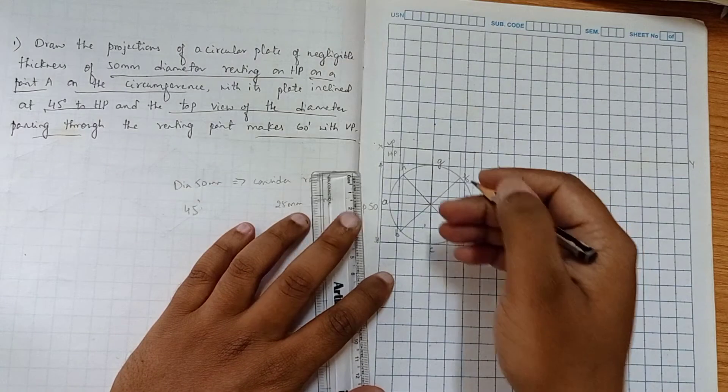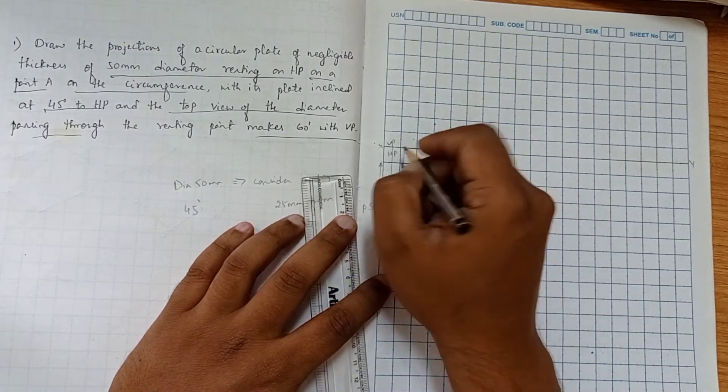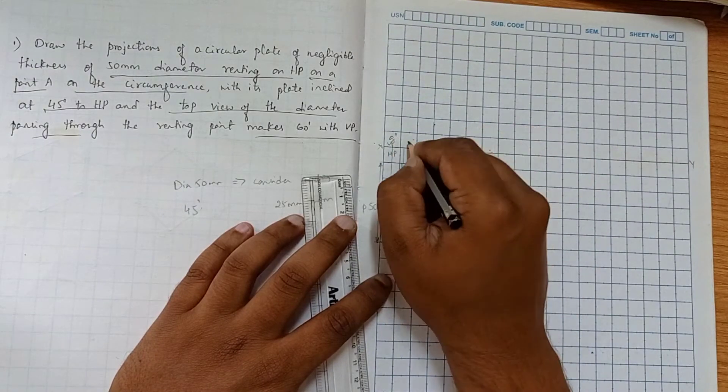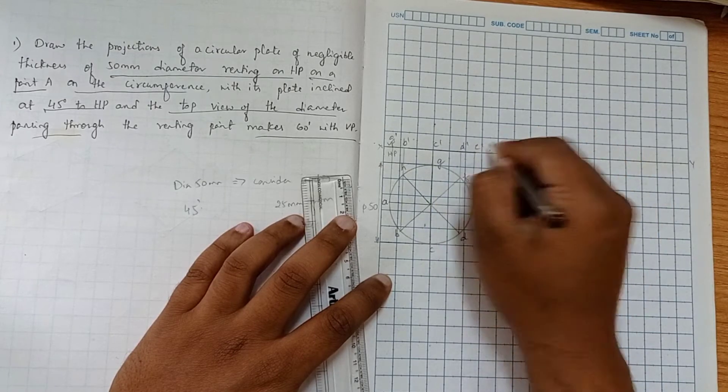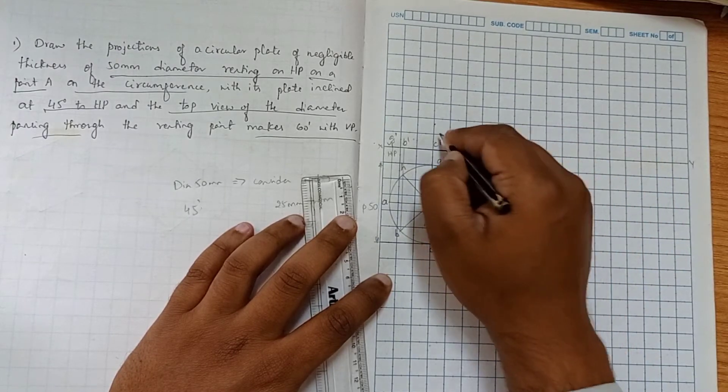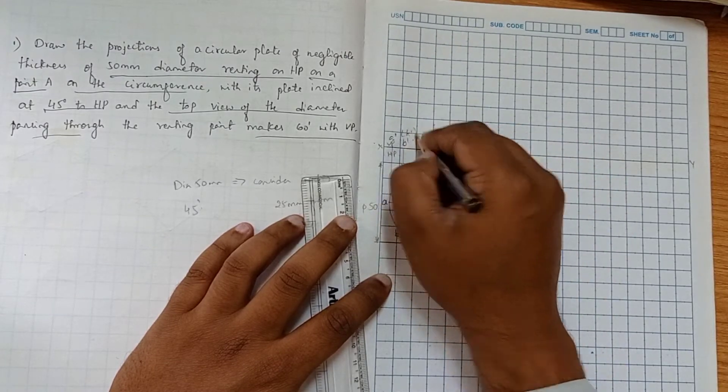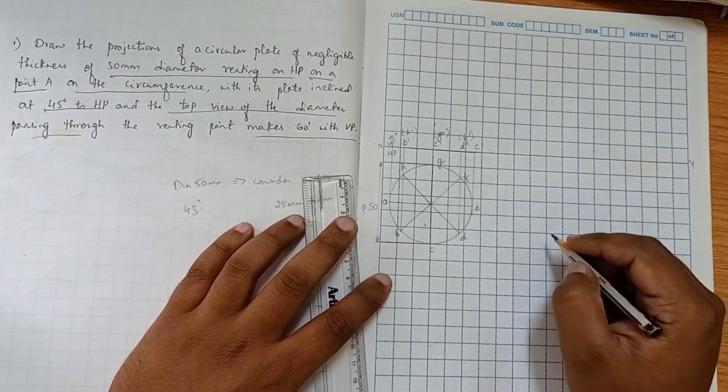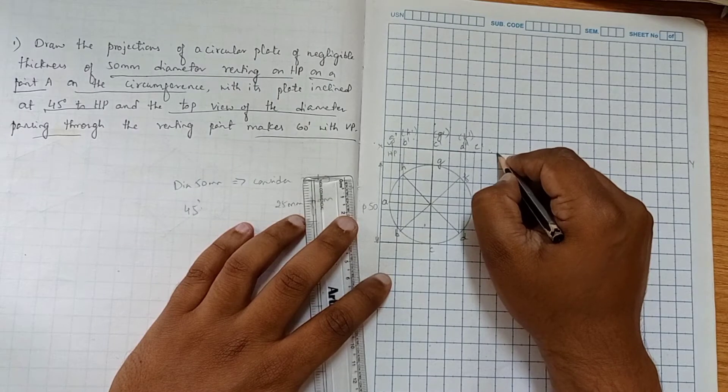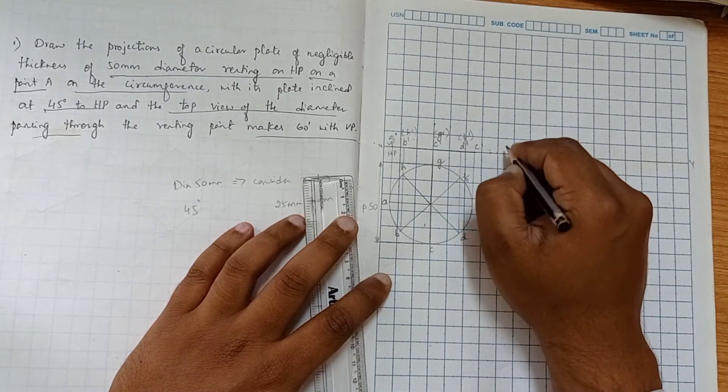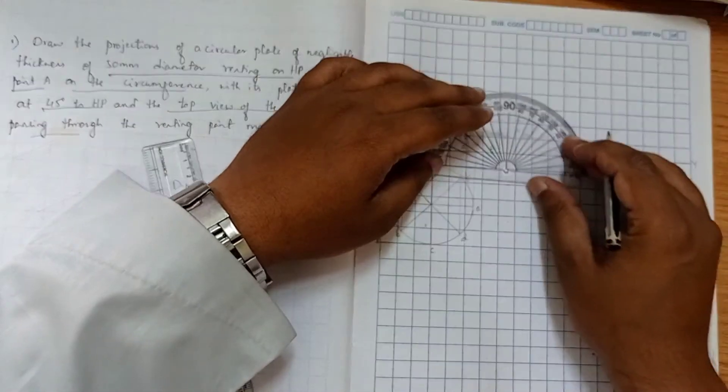We have done with the front view. Now we have to mark the notations. From the front view we can see A dash, B dash, C dash, D dash, and E dash - those things which are visible. But F dash, G dash, and H dash are not visible from the front view. Now we have to mark the 45 degree angle. Before that, we have to take a reference point E dash. Now we have to mark at an angle of 45 degrees.